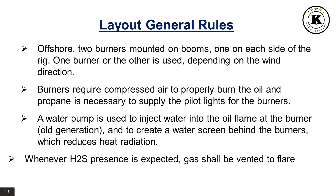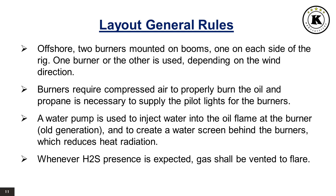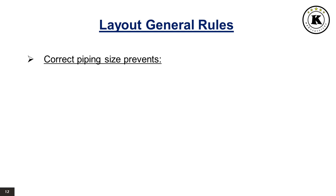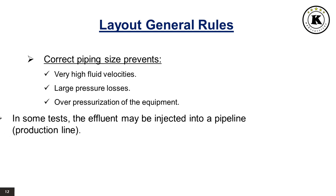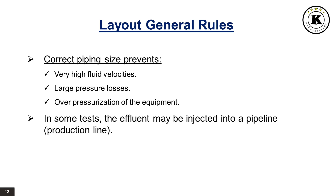Whenever H2S presence is expected, gas shall be vented to flare. Correct piping size prevents very high fluid velocities, large pressure losses, and over-pressurization of the equipment. In some tests, the effluent may be injected into a pipeline or production line.